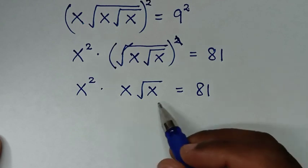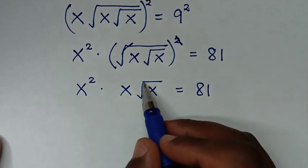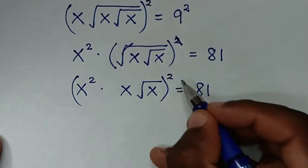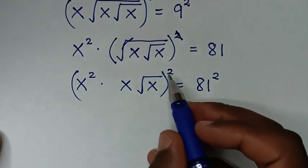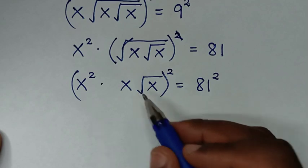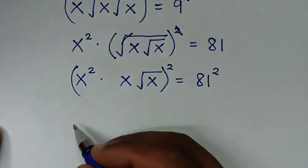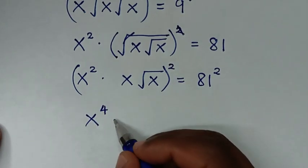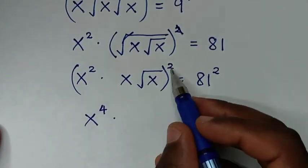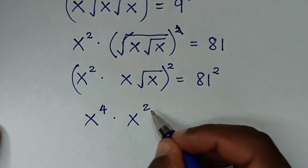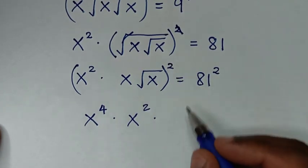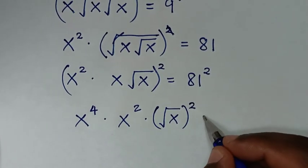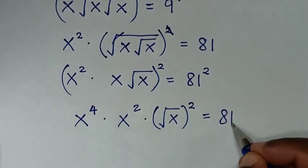In the next step, to remove the third square root, we will square again in both sides. When we take this square inside the bracket it will be x squared squared. So here it will be x to the power of 4, then times x squared, then times square root of x bracket squared.